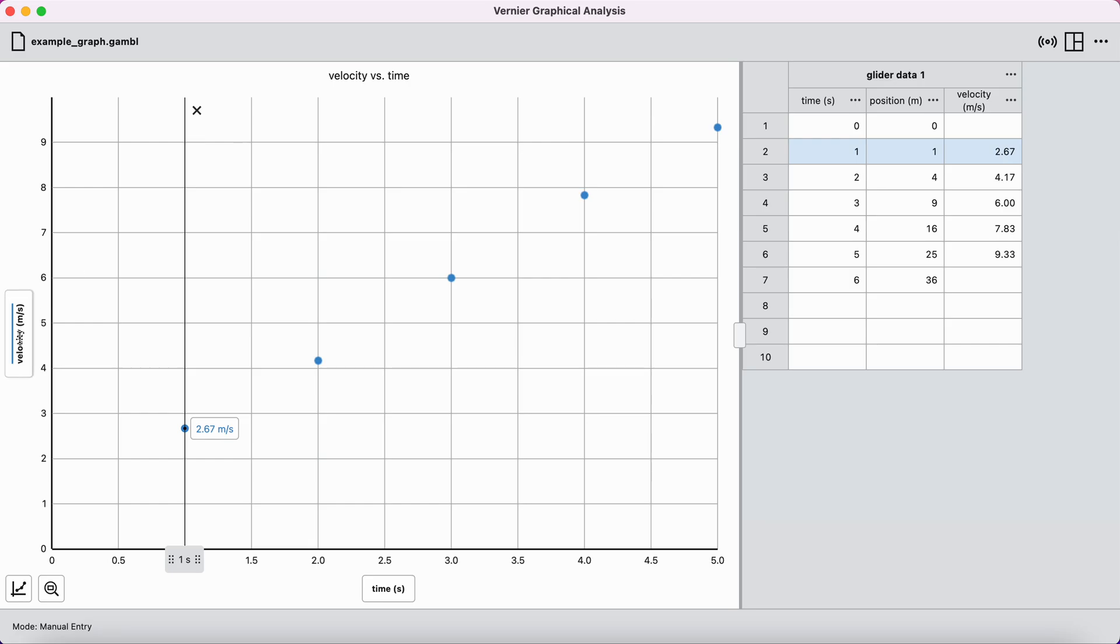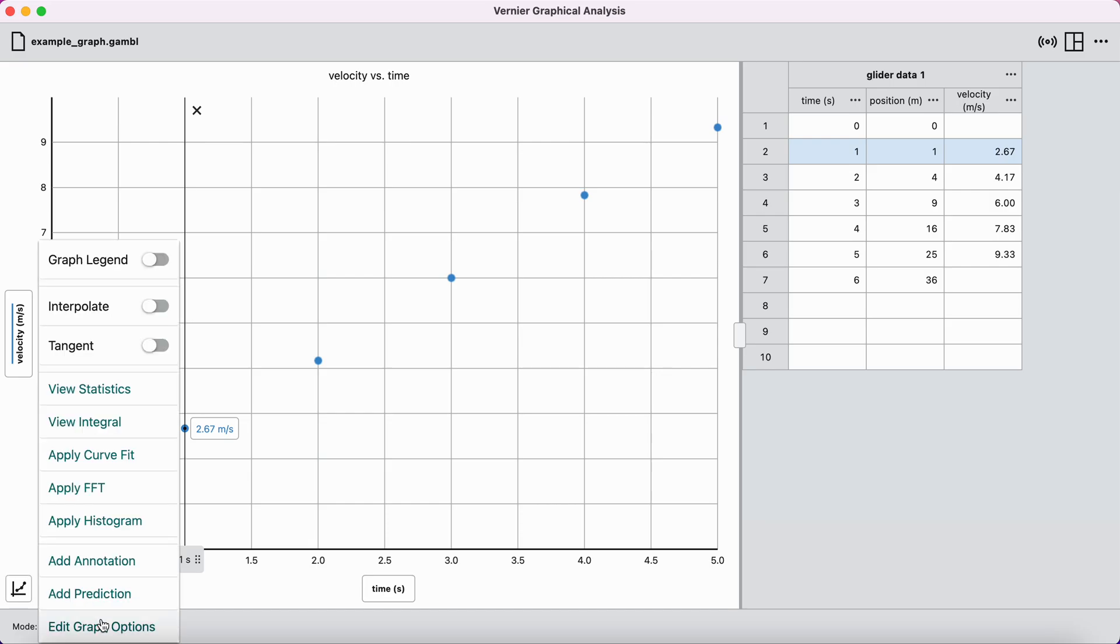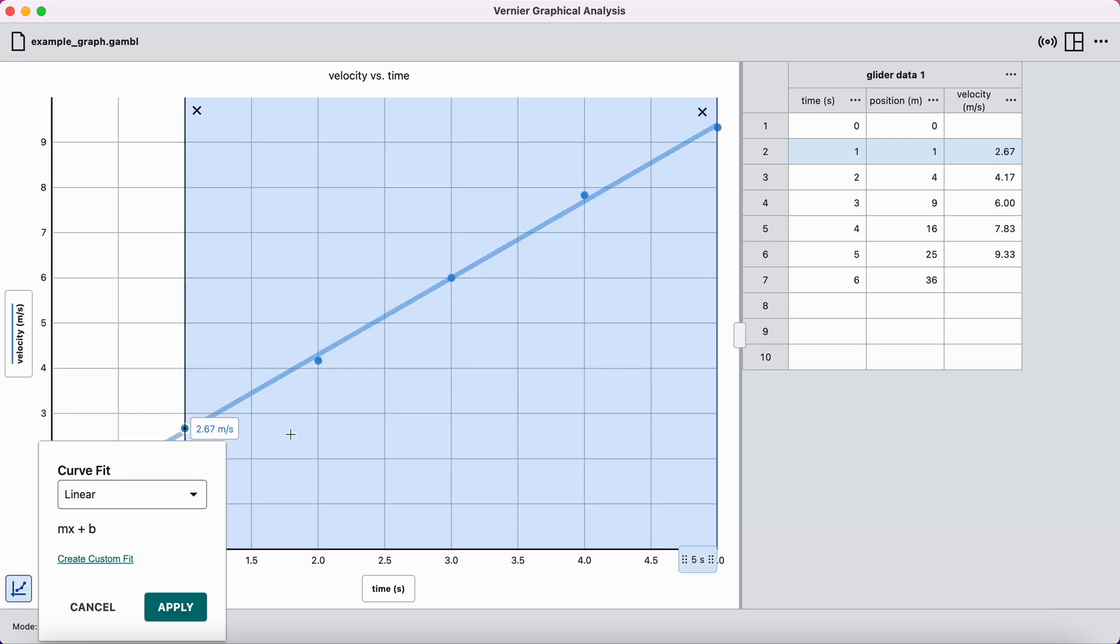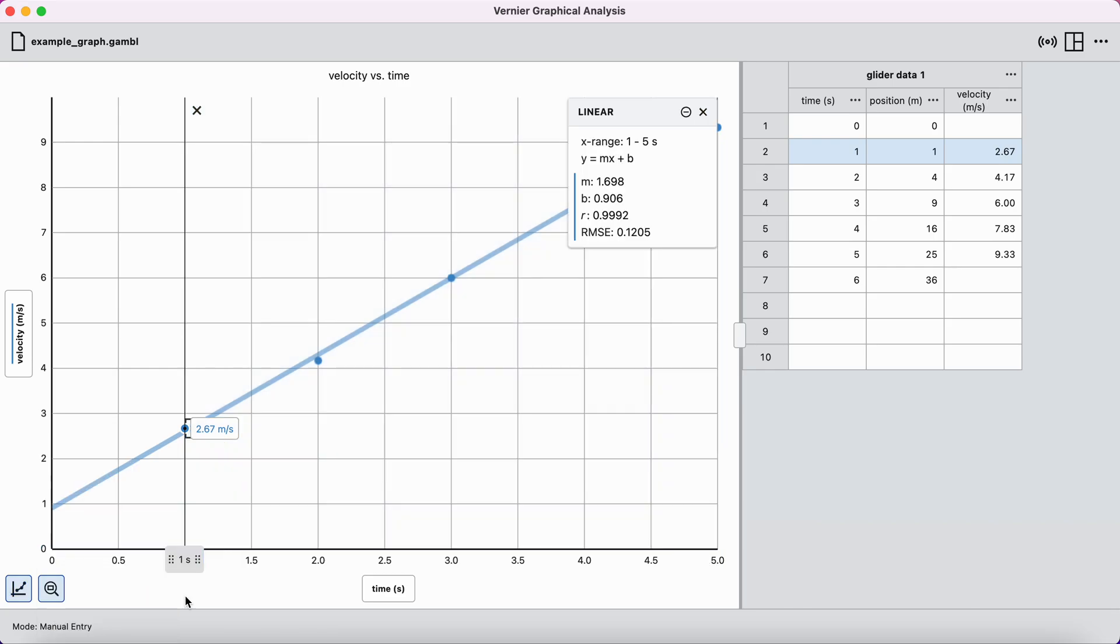I've got a graph of how the velocity, plus the direction, I'm in the positive direction here, changes as a function of time. I can, again, apply a curve fit just like we did with the position time data by going to the graph options in the bottom left and then apply curve fit. I can see that a linear curve fit seems to fit this data pretty well. And so, I click on this.